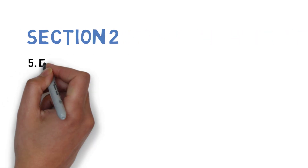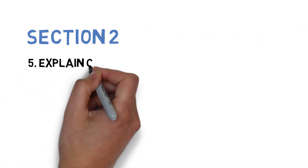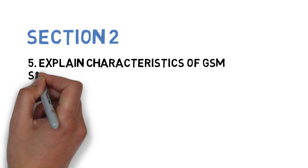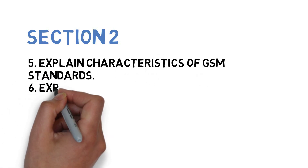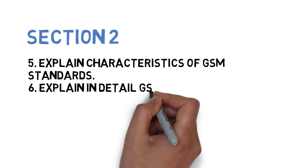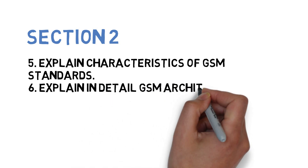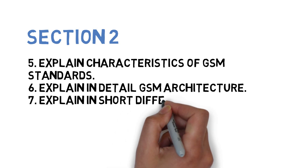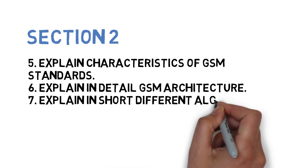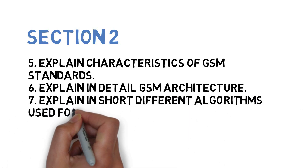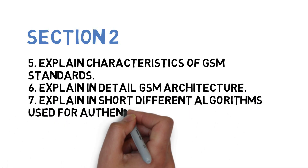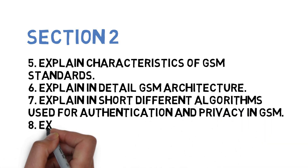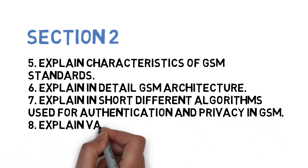Once you finish section one, move to section two. The first question is characteristics of GSM standards, next is GSM architecture, then explain different algorithms used for authentication and privacy in GSM, and the fourth question is explain various nodes present in E-UTRAN architecture. These four questions make section one plus section two a total of eight important questions to finish on a priority basis.